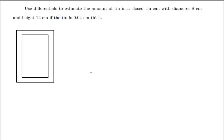Use differentials to estimate the amount of tin in a closed tin can with diameter 8 cm and height 12 cm, if the tin is 0.04 cm thick. There is a diagram here showing the original can and the expansion of its volume. Think of the tin as the volume added to the empty can inside. Based on the description, we assume automatically that this is a right cylindrical shape, because it has a diameter, a height, and a uniform thickness. Uniform thickness means that 0.04 applies on the sides and on the top and bottom.